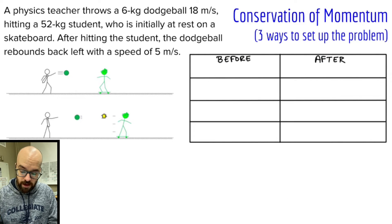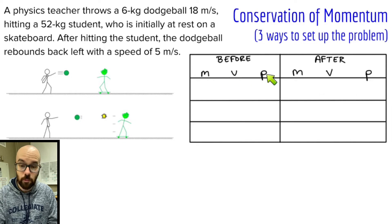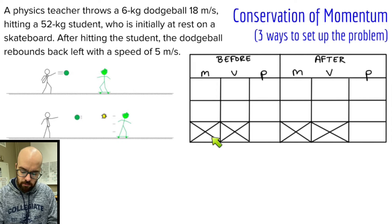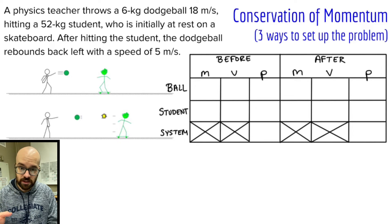Here's the setup: we've got the before and the after. For each one we're going to write out M, V, and P — mass times velocity gives us the momentum — for both before and after. I'll divide the table into M, V, P columns, crossing out the boxes where we don't add masses or velocities. On the left side I'll write out the different objects: the ball, the student, and the ball-and-student system for the combined momentum.